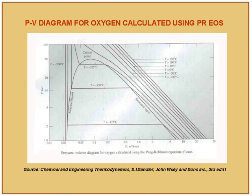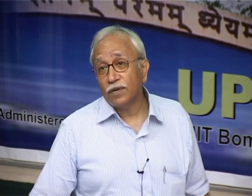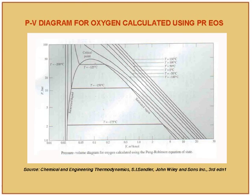This is a pure component PV diagram for oxygen using the Peng-Robinson equation of state — showing how you can generate a PV diagram for the whole region of interest. Once we are in the high-temperature, low-pressure zone, the characterization can be done using the ideal gas law, or maybe with small values of Z. But calculations become more difficult as you approach the critical point, and very tricky when you go beneath the critical point into the two-phase zone.